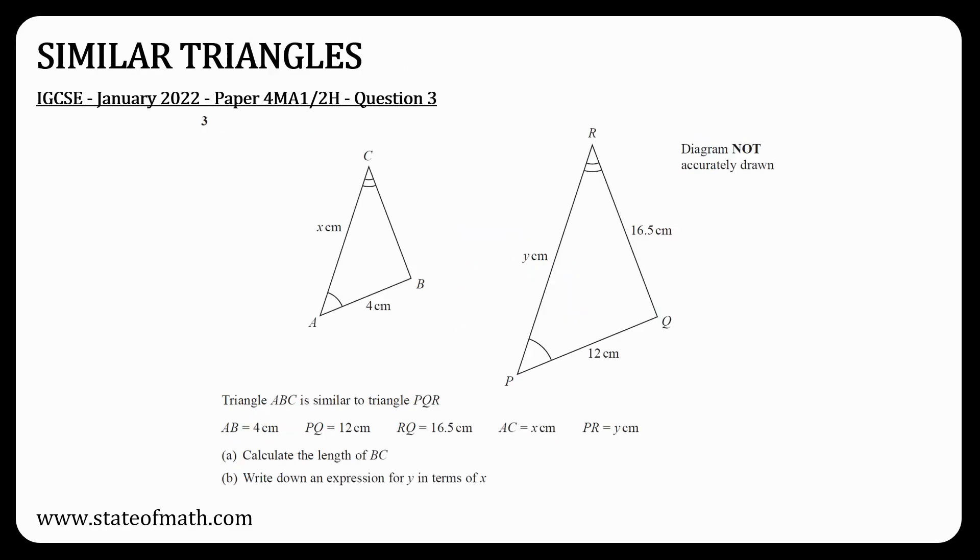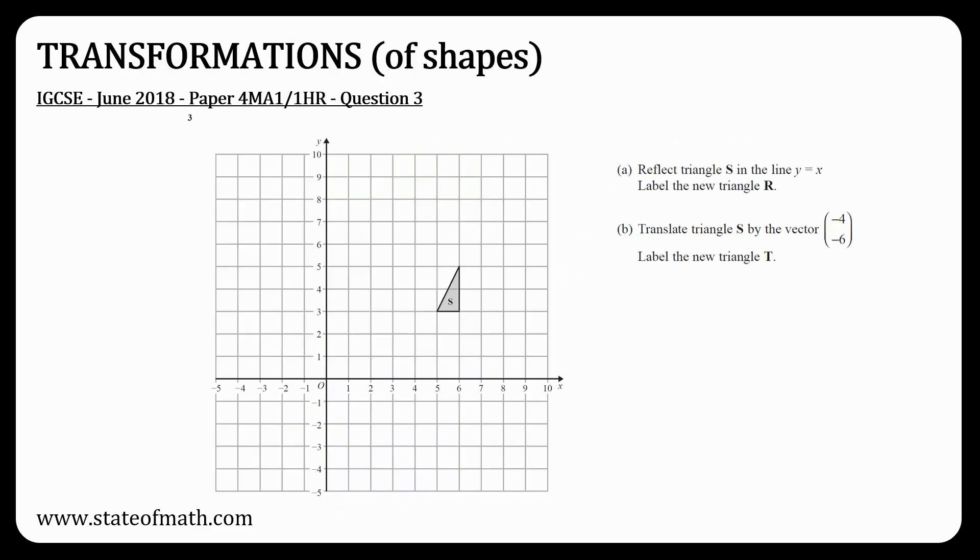On paper 1, there was a question on areas of similar shapes, but no question on similar triangles. It happened in the past to have both types of questions in the same sitting. Transformations of shapes was another topic I was missing from paper 1. Usually, these questions are relatively straightforward, so if a question appears, make sure you are ready for it to collect all the marks.